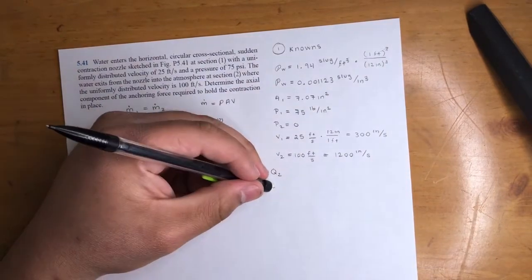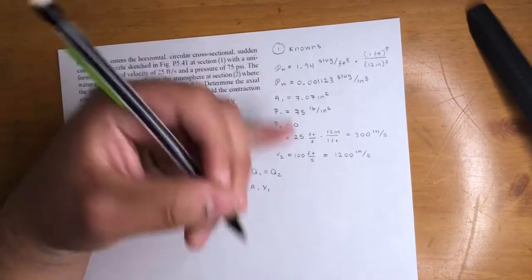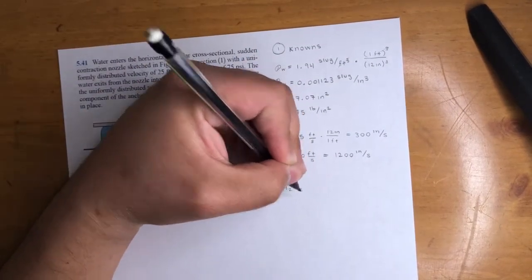So you will get A1, oh, I'm sorry, not equal to, A1 V1 is equal to A2 V2, right? Cool.